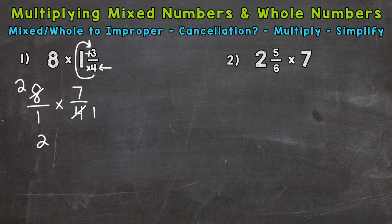So we now have easier numbers to work with here. So we simplified the problem. You can think of it as simplifying the problem before you multiply. So 2 times 7 is 14, 1 times 1 is 1. So we end up with an improper fraction there, 14 over 1, which is just 14. We can write it as a whole number.